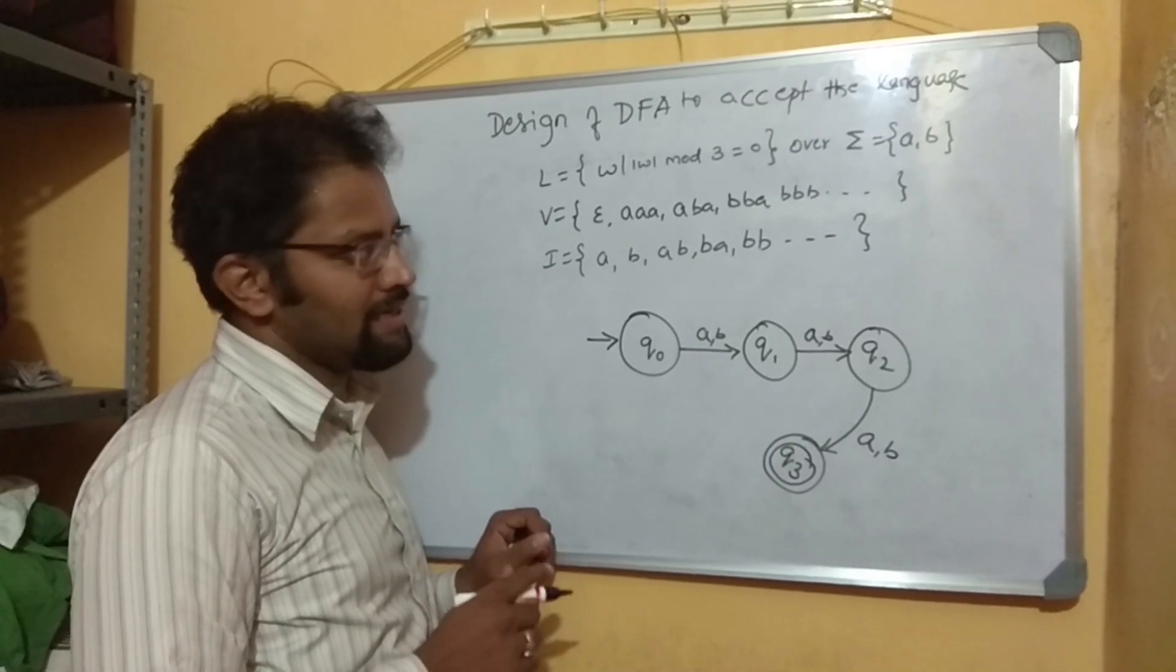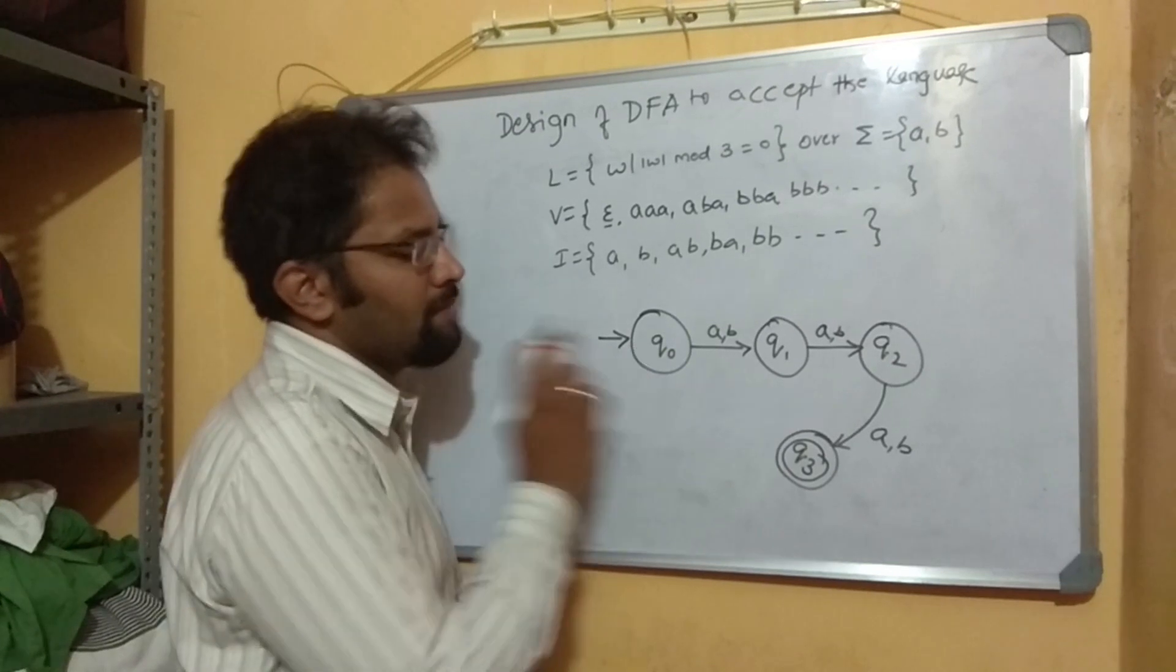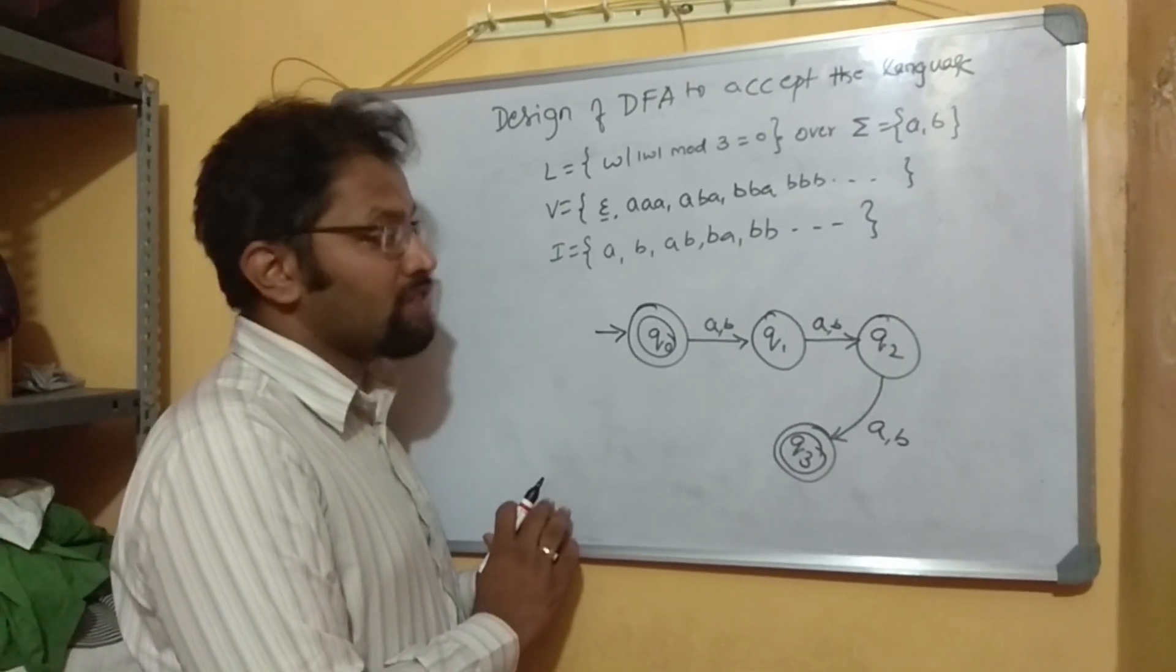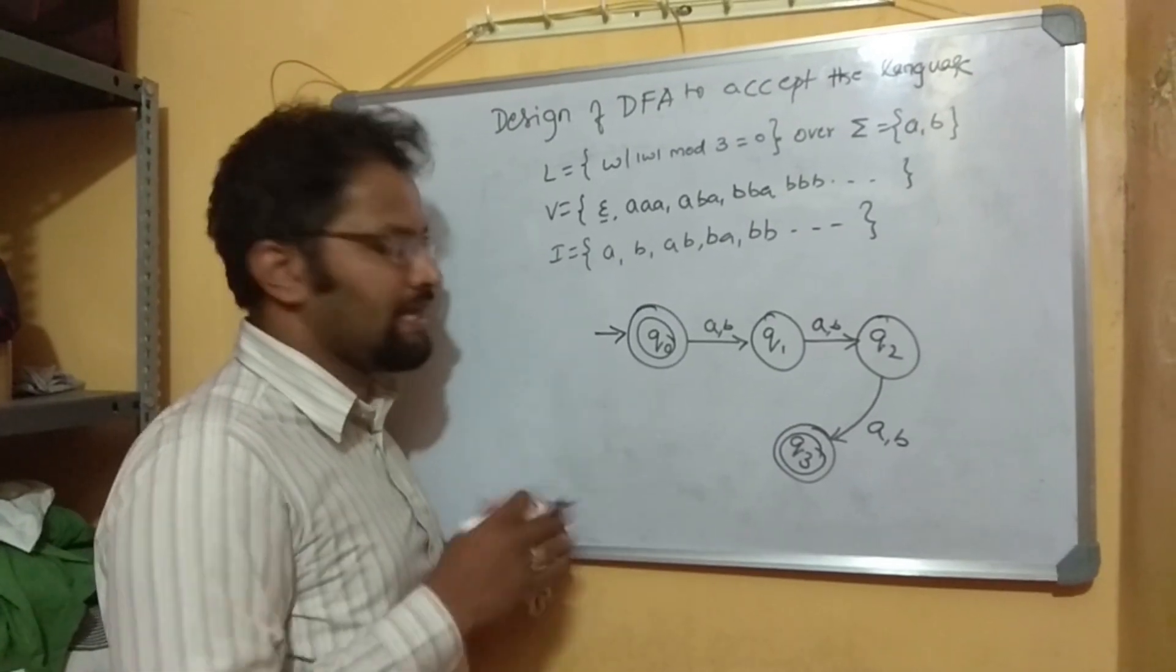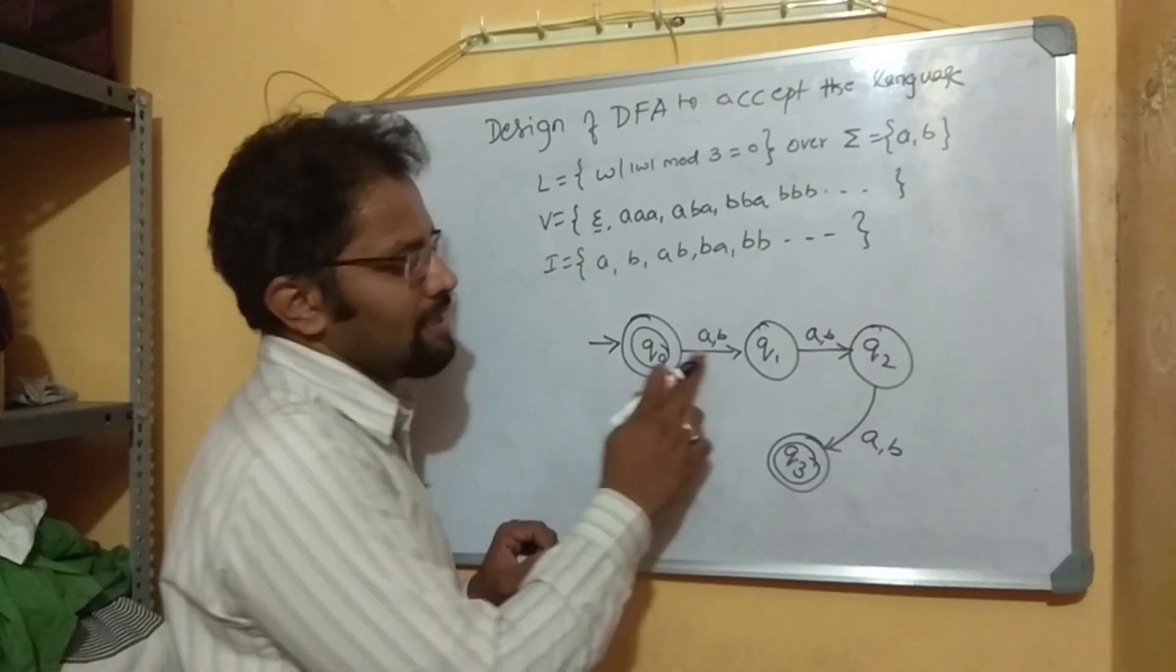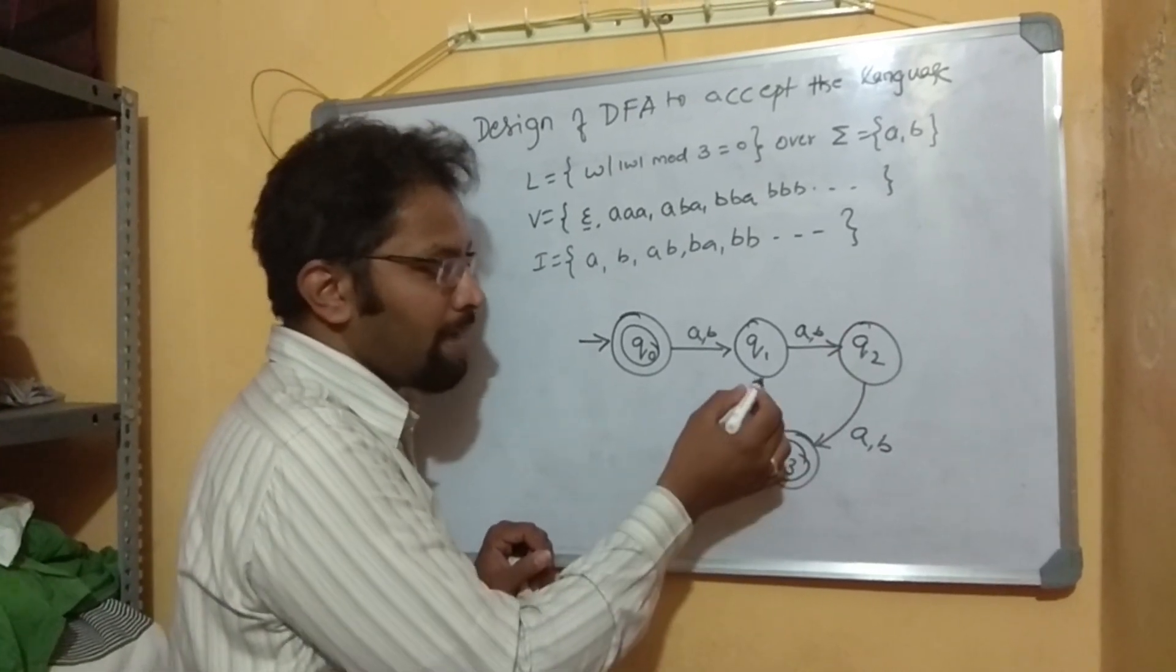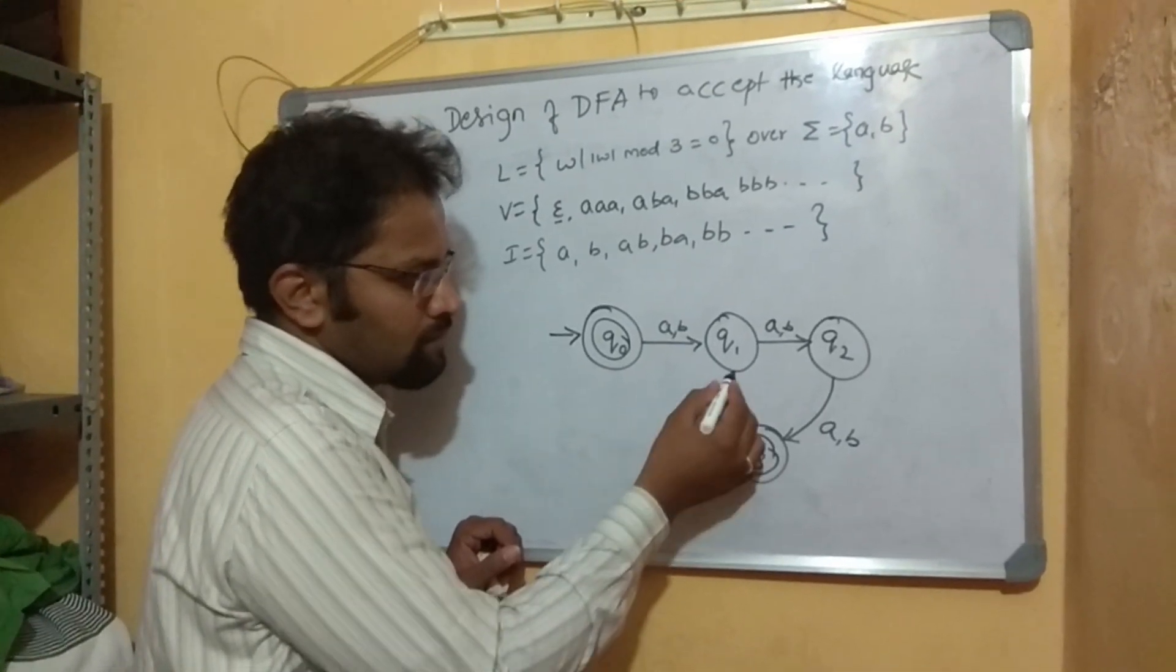Again, please understand, minimum string is epsilon. In that case, I should make Q0 as final state. Yes, I can make it. Now, epsilon is accepted. The problem is, what you do when you have four, five, six symbols. In that case, you should come back. One option is, from Q0 after accepting A, reach Q1, with Q1, Q2, Q3, three symbols are accepted. You can come back to this.